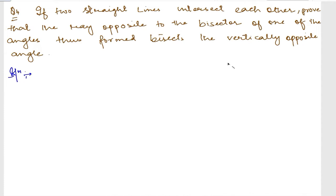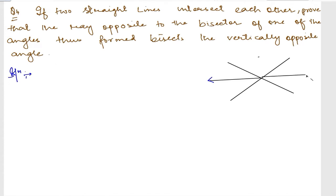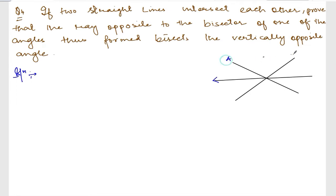First of all, let us draw two straight lines intersecting each other. We need to prove that the ray opposite to the bisector of one of the angles bisects the vertically opposite angle. If I bisect with this ray, the ray opposite to this one will be this one. Let me label the points: A, B, C, D, E, F, and O.